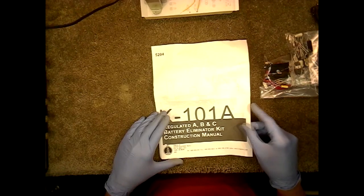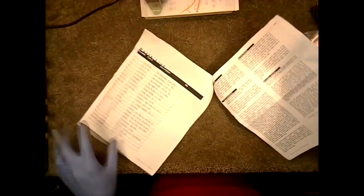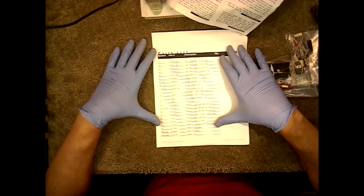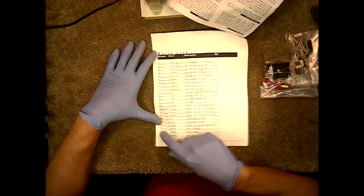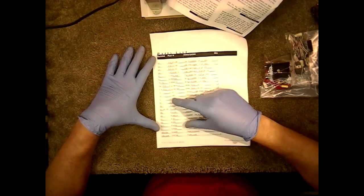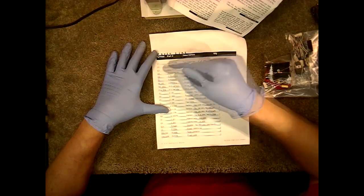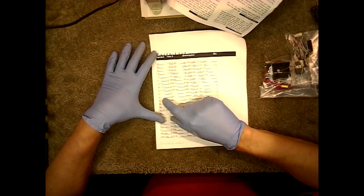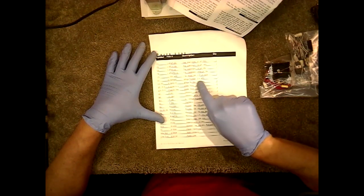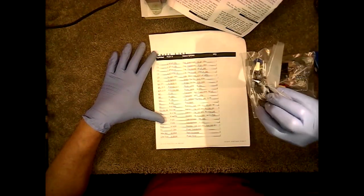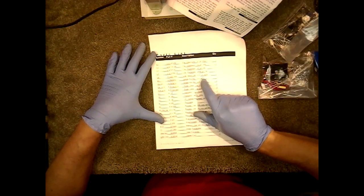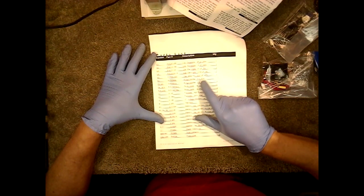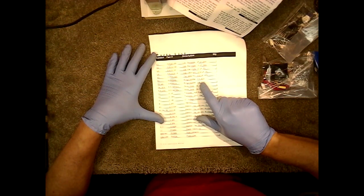So here's our instructions, and this is a regulated power supply. So, it has the A, B, and C battery system. This is the parts list. We have the transformer, which is here, T1, the power transformer. We have five capacitors of different values. We got three diodes here, three bridge rectifiers. So, we have three bridge rectifiers, a two amp at 400 volts, and two two amps at 100 volts.